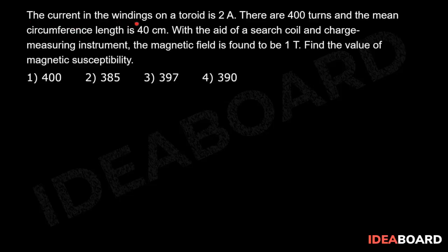The current in the winding on a toroid is 2 amperes. There are 400 turns and the mean circumference length is 40 centimeters. With the aid of a search coil and charge measuring instrument, the magnetic field is found to be 1 tesla. Find the value of magnetic susceptibility. Dear students,